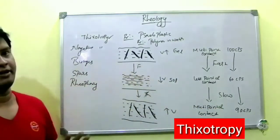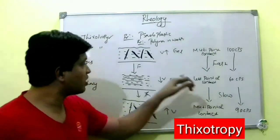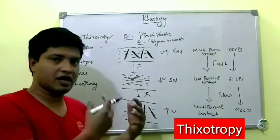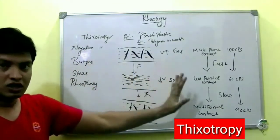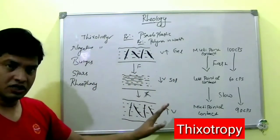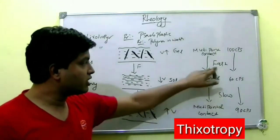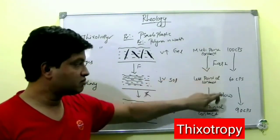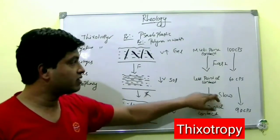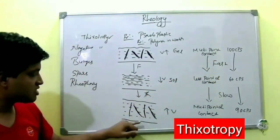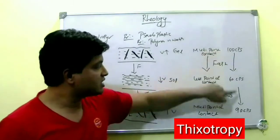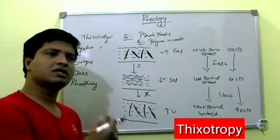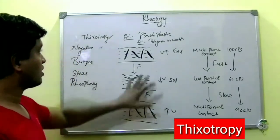The consistency is lost upon shearing — because you have sheared it, its consistency is lost. So to remember: isothermal (constant temperature), comparatively slow recovery (loses viscosity fast under stress, recovers slowly), of a system whose consistency is lost upon shearing. That is what thixotropy is.